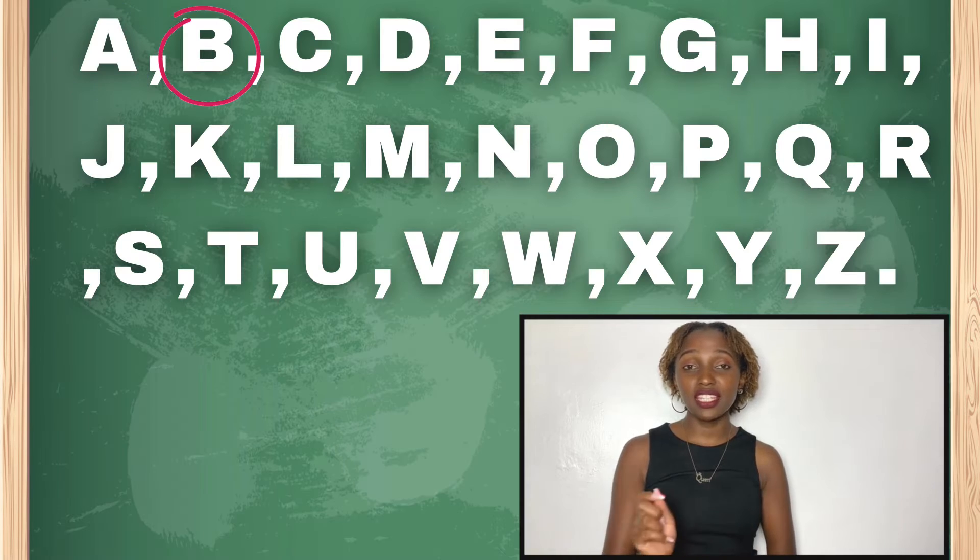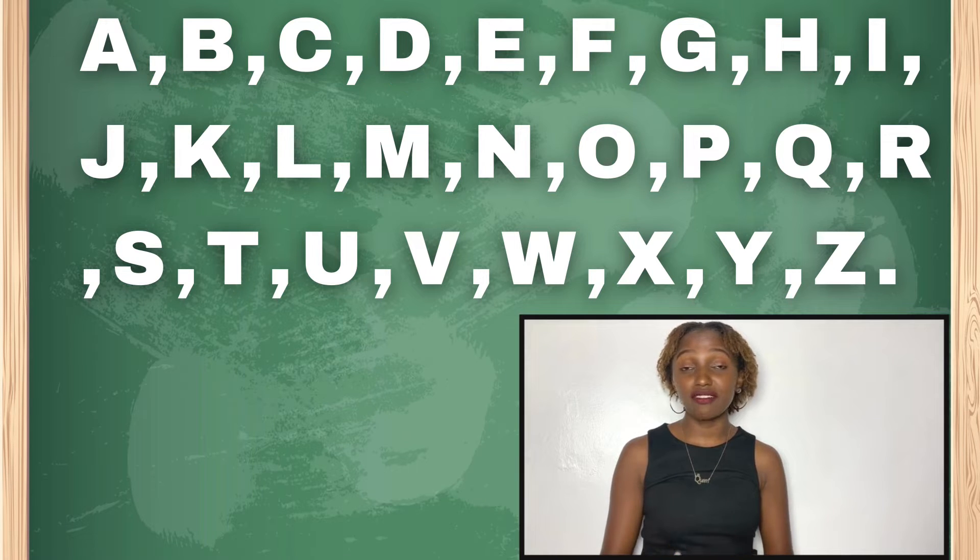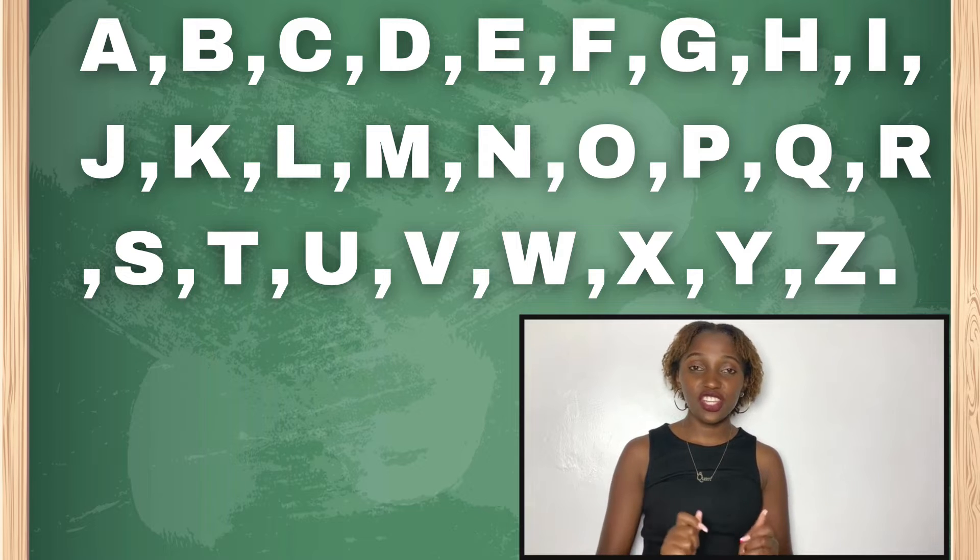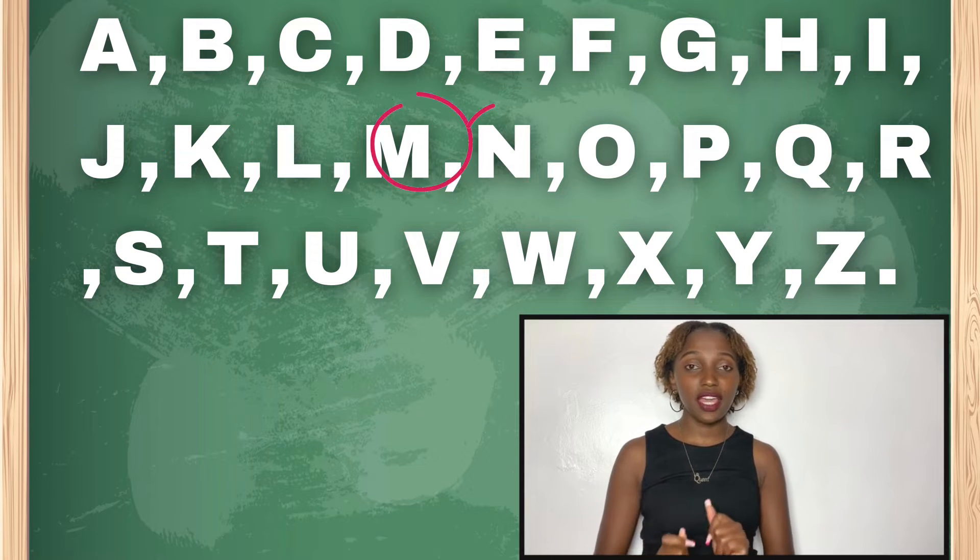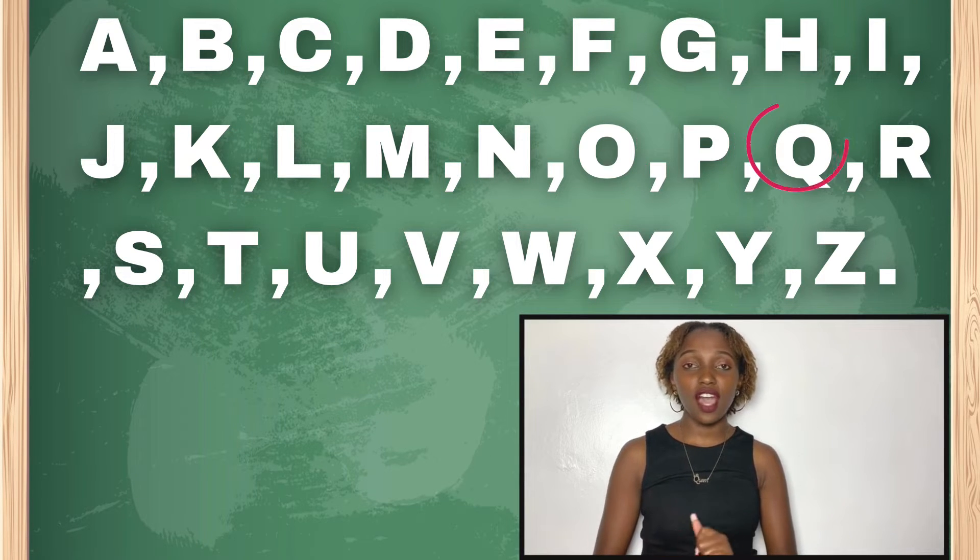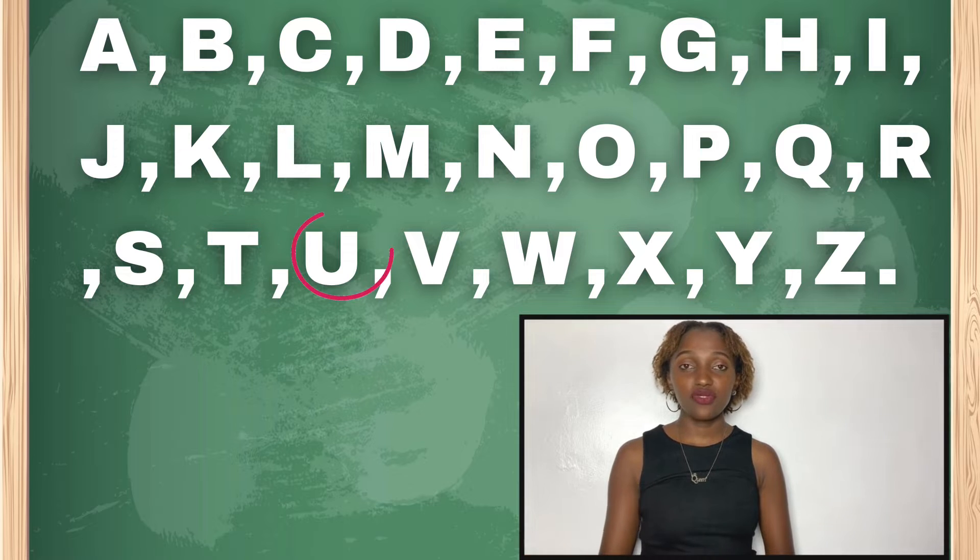So we have A, B, C, D. We are writing all the alphabets. E, F, G, H, I, J, K, L, M, N, O, P, Q, R, S, T, U, V, W, X, Y, Z. Alright.